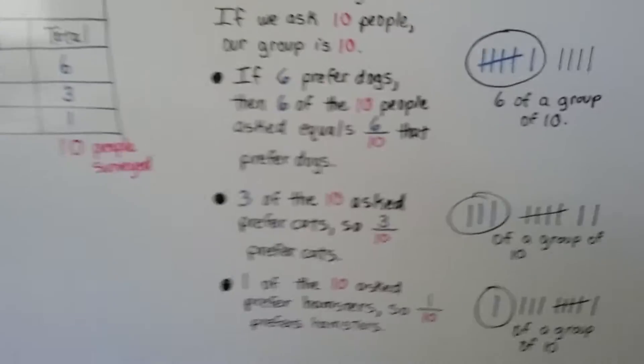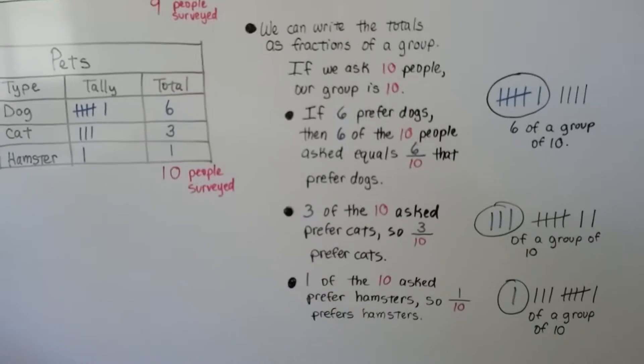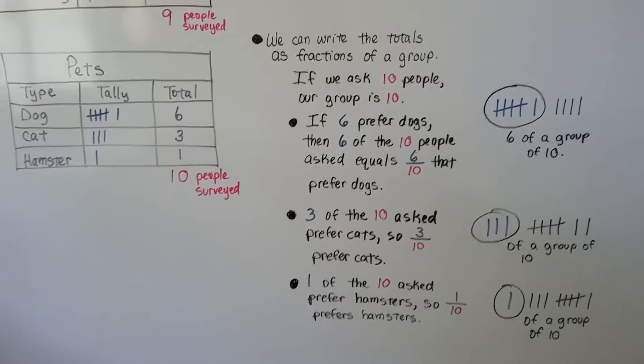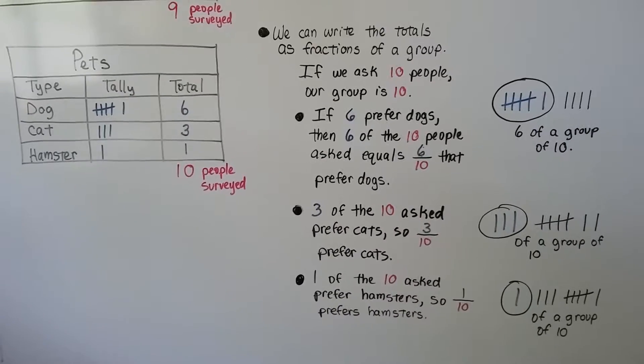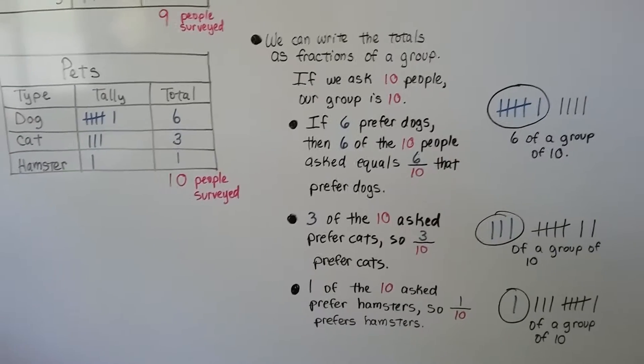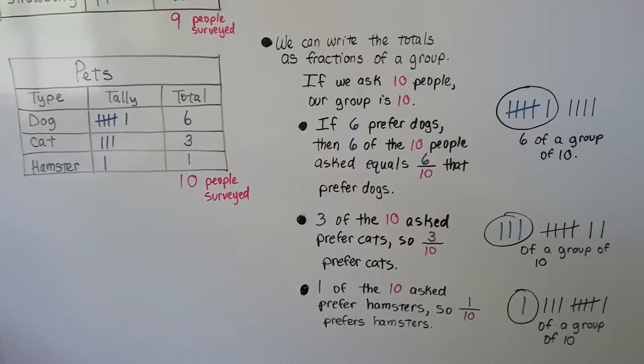We can actually use the information to make fractions of a group. And we can see which is the favorite pet or which is the favorite flavor of ice cream very easily by looking at the totals.